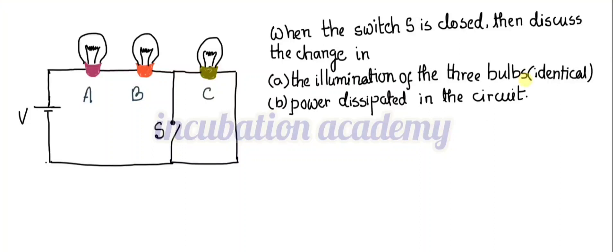Welcome everyone. A circuit diagram is shown here with three valves A, B, and C. These three valves are identical — their power ratings are the same. If connected to the same voltage, they will generate the same amount of heat energy per second, and the resistance of their filaments are also the same. When switch AC is closed, we discuss the change in illumination of the three valves — that is, their intensity and power.